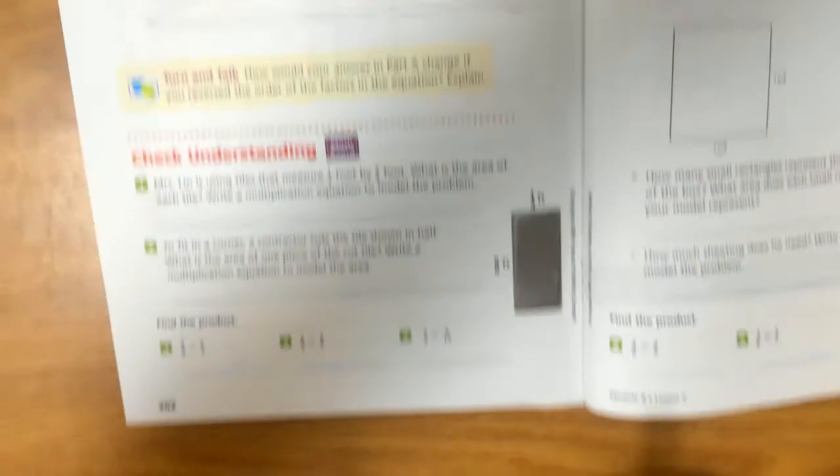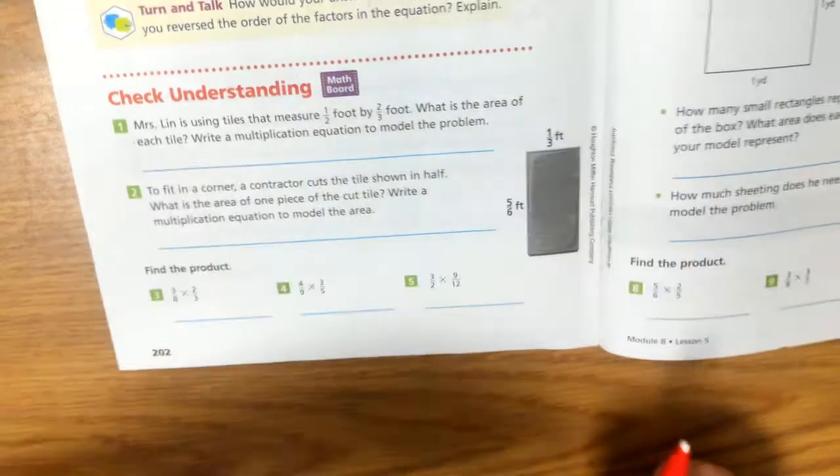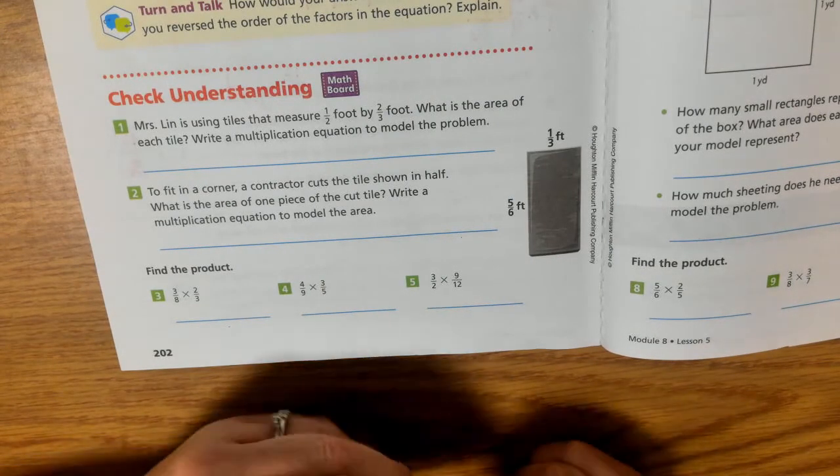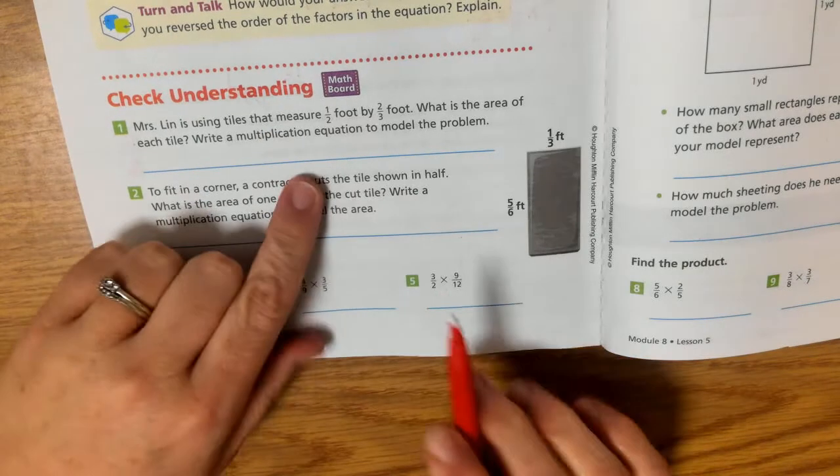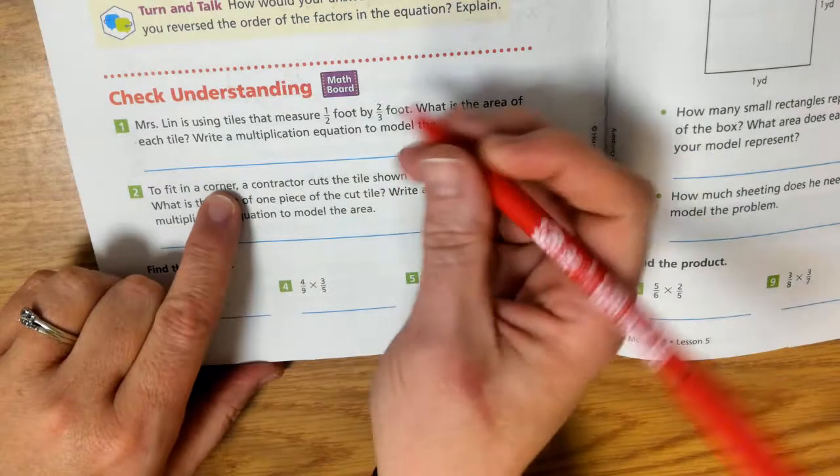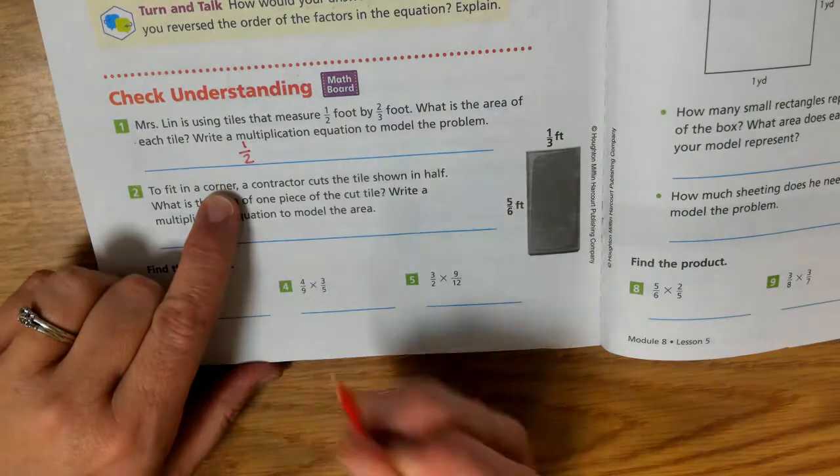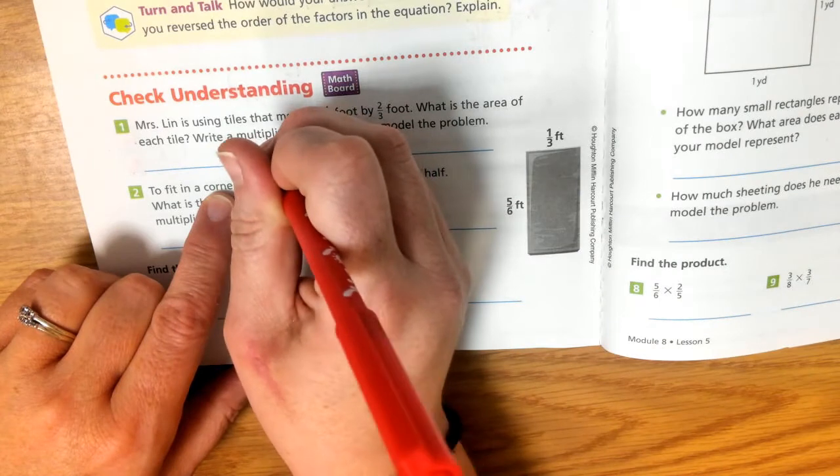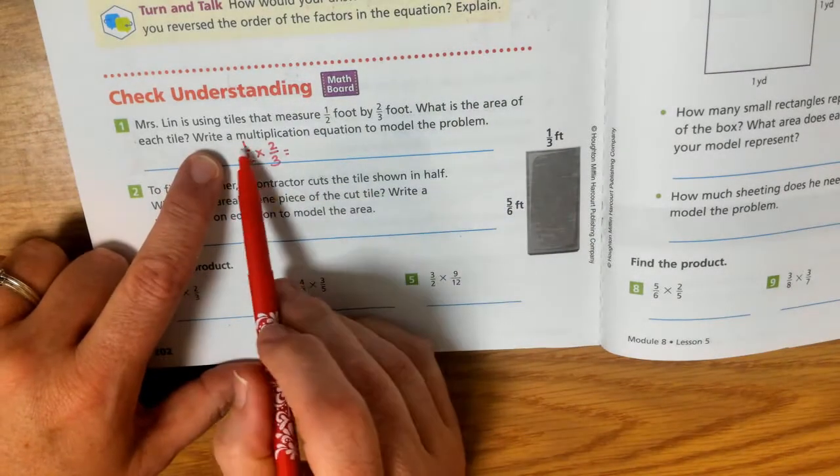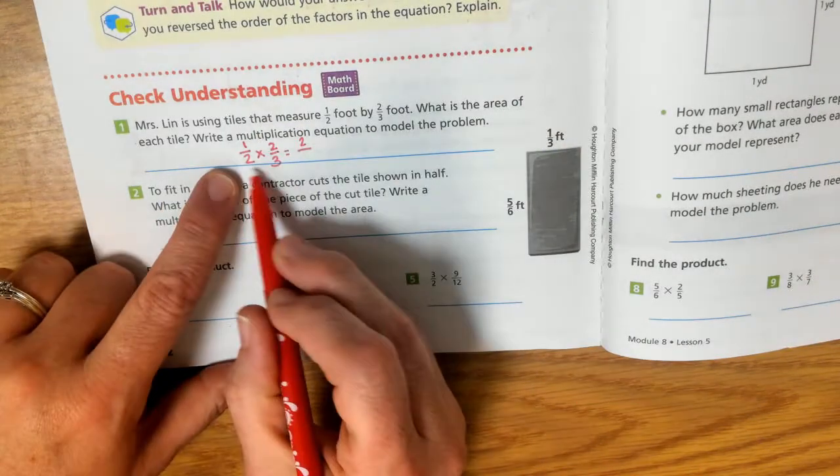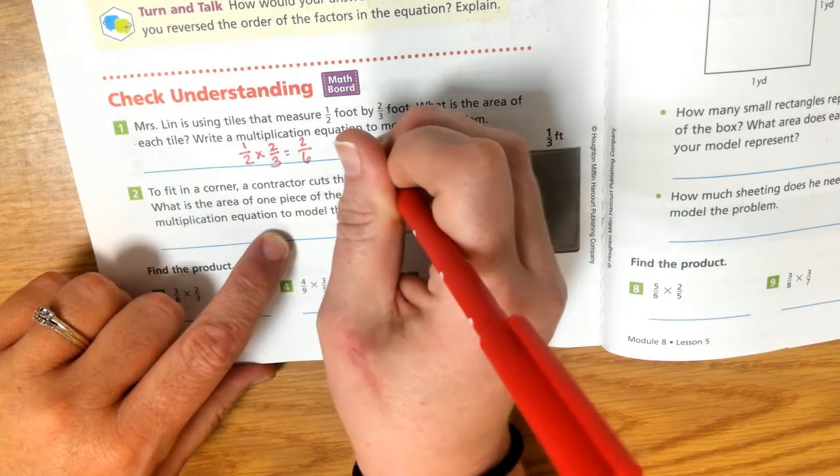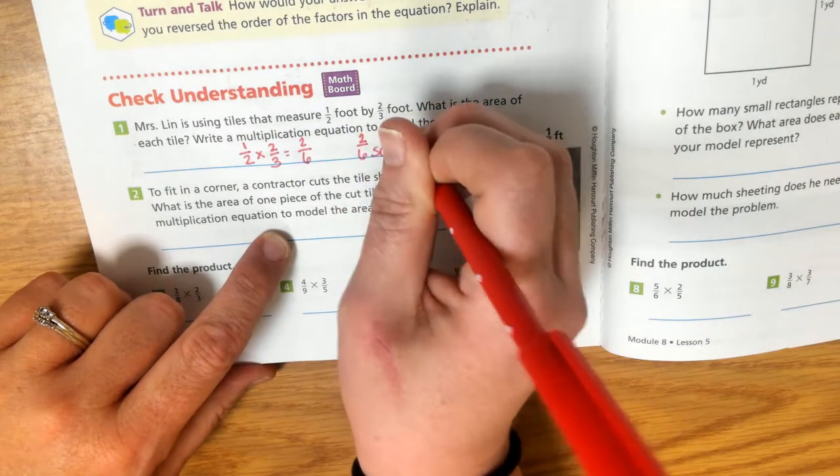Check for understanding. Ms. Lynn is using tiles that measure 1 half foot by 2 thirds foot. What is the area of each tile? Write a multiplication equation to model the problem. 1 half foot by 2 thirds foot. Multiply your numerators. 1 times 2 is 2. Multiply your denominators. 2 times 3 is 6. So 2 sixths square feet.